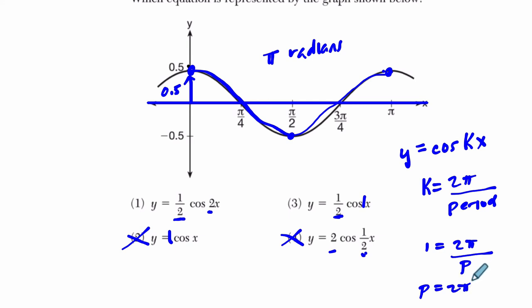The normal period for a cosine function is 2π radians. And that's what this one is saying right here. So it must be choice 1. But let's confirm that. If k is 2, and 2 equals 2π over the period, multiply both sides by p, and divide by 2 on both sides, and we get π. The period is π.